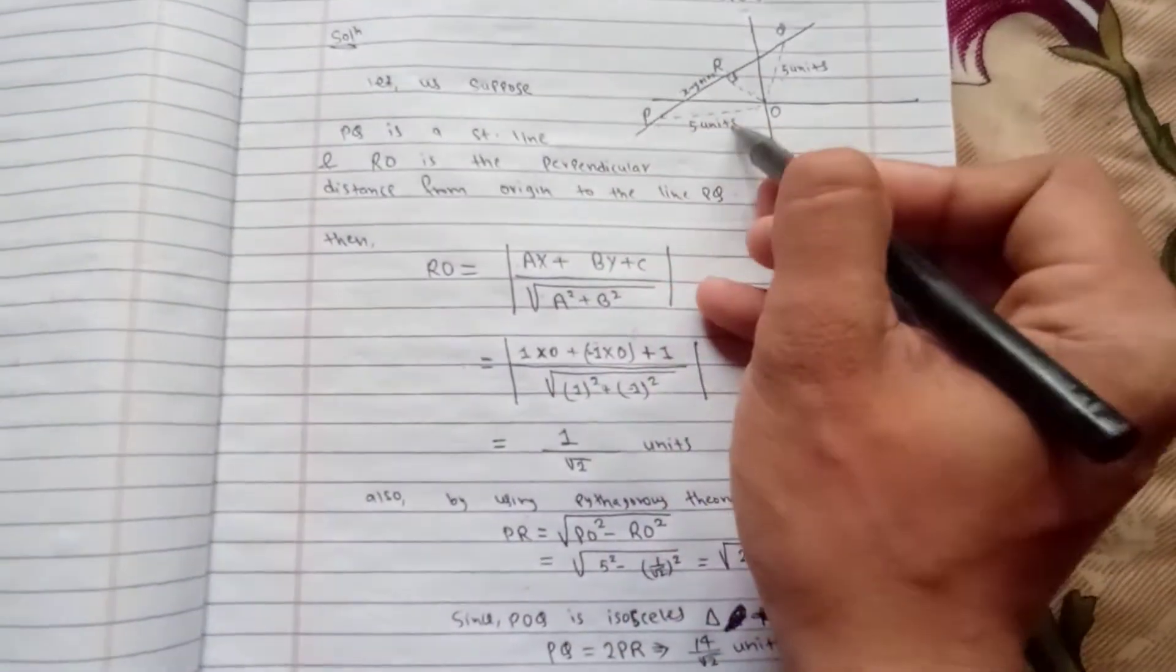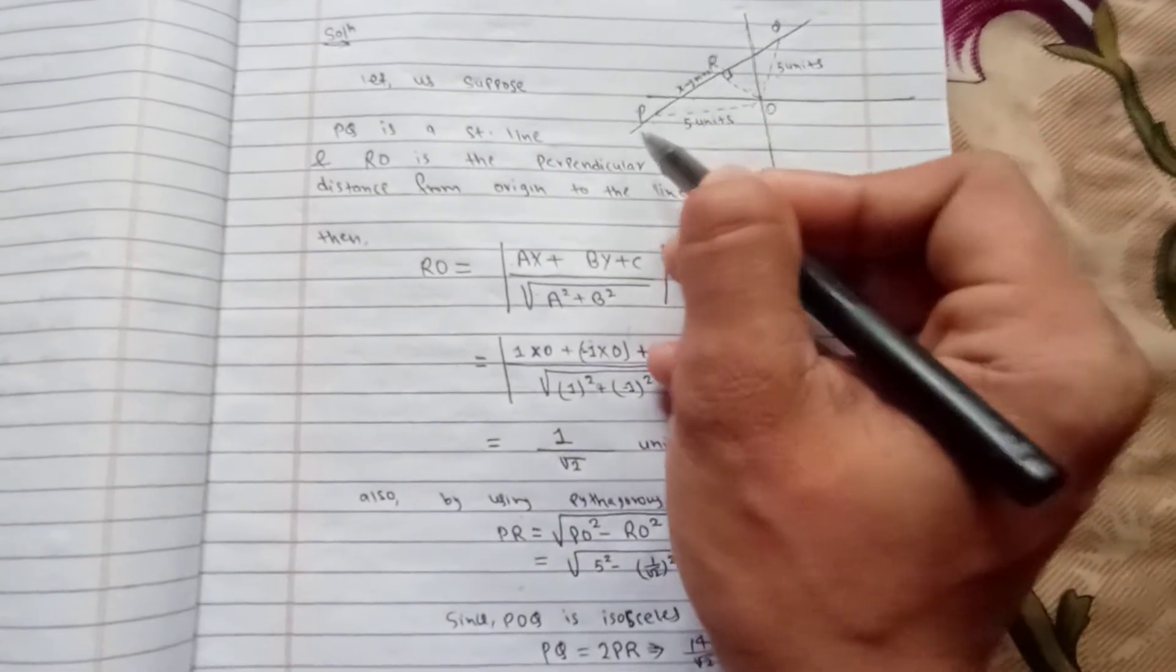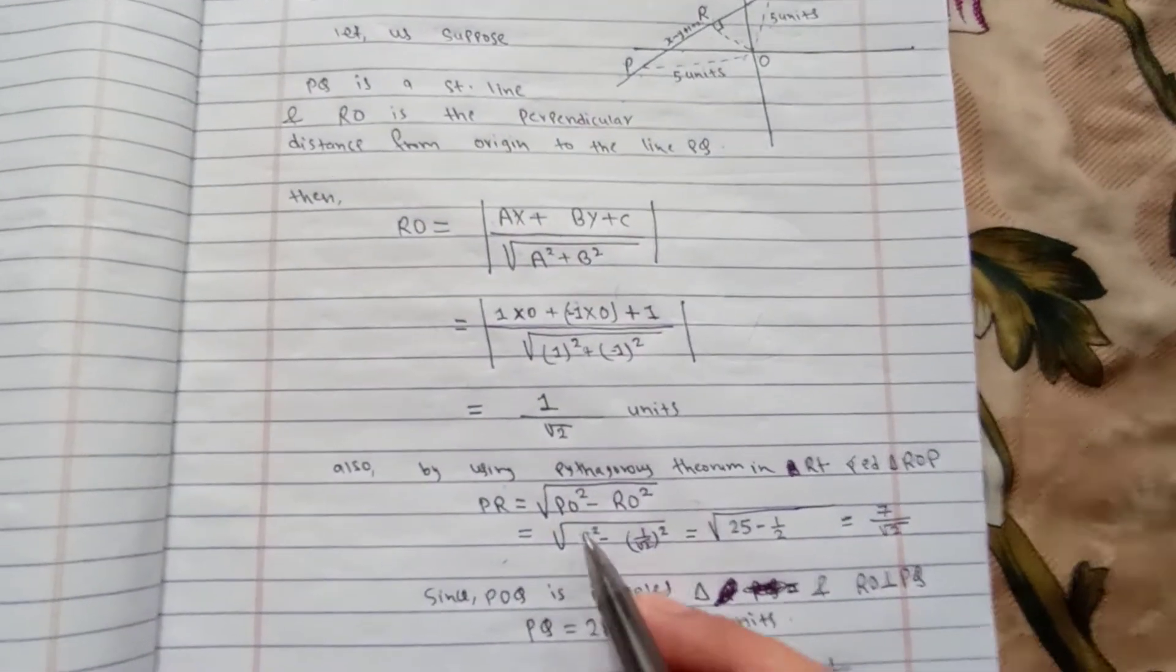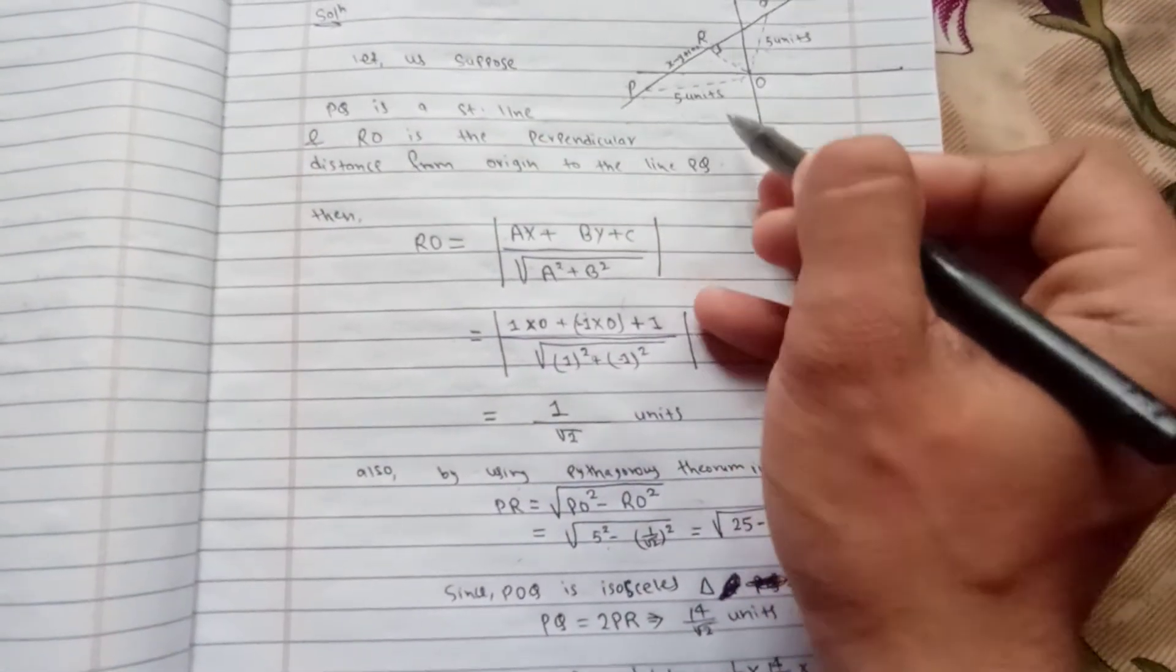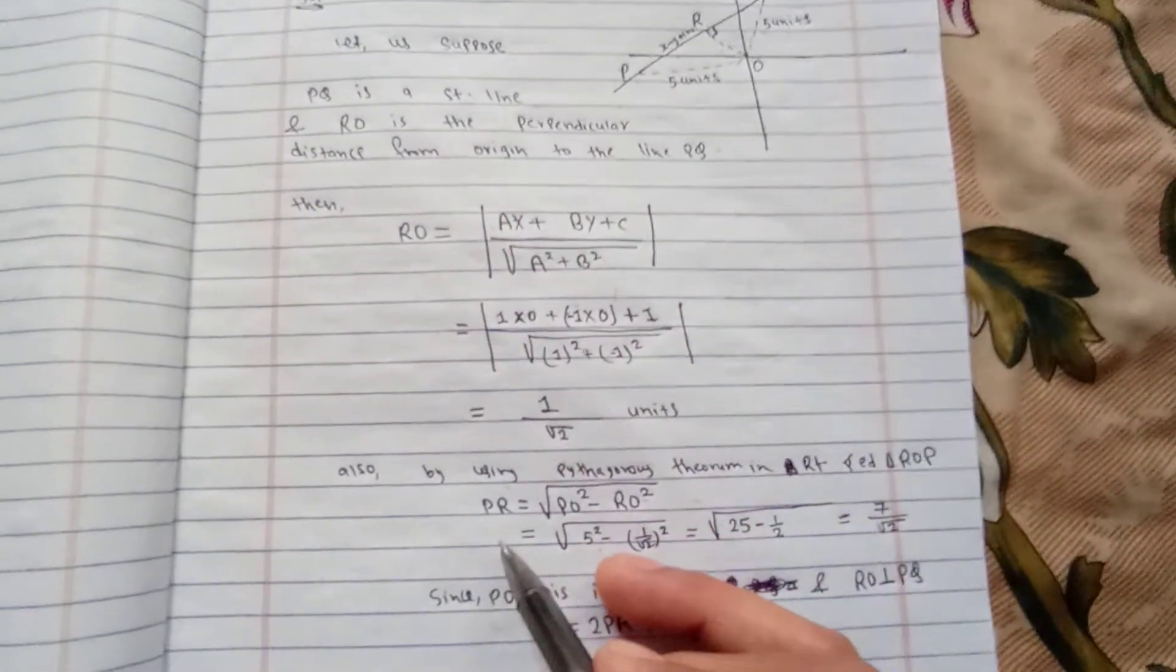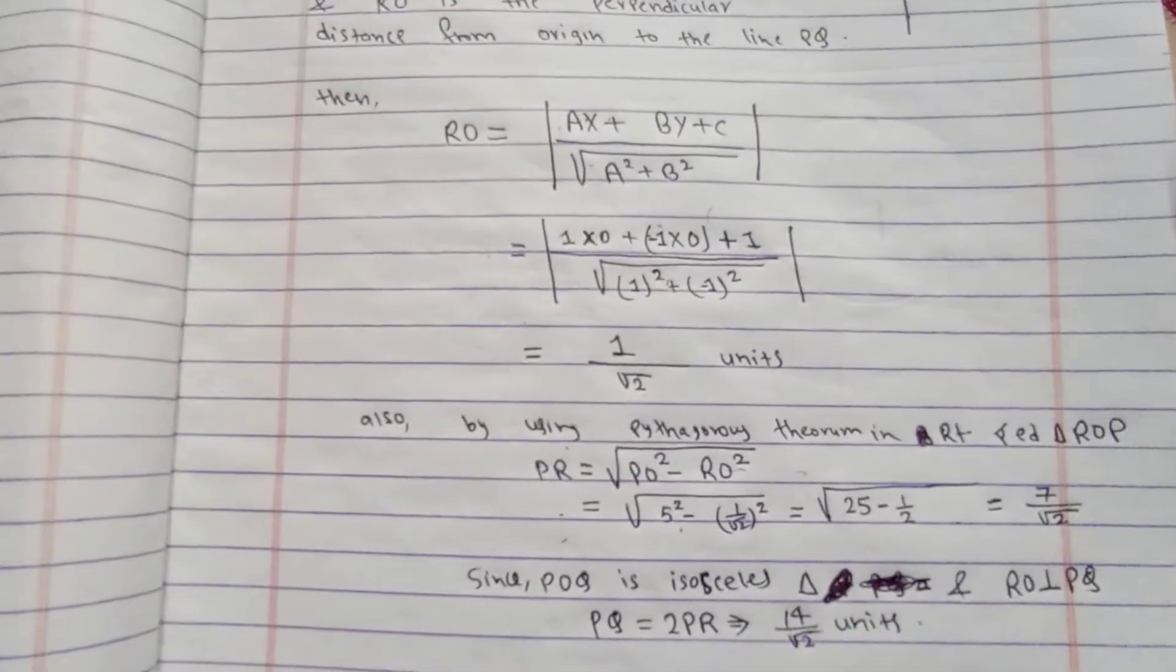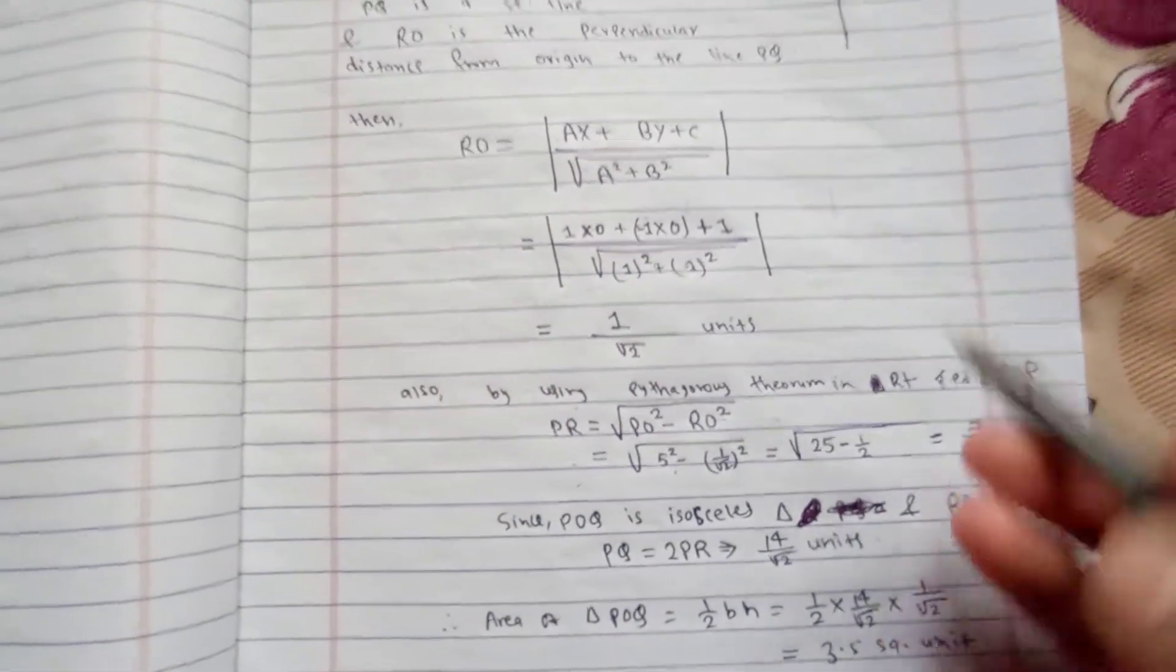Using Pythagoras theorem in right angle triangle ROP, we get PR equals PO square minus RO square. Putting the value of 5 units for PO and 1 by root 2 units for RO, we get PR as 7 upon root 2 units.